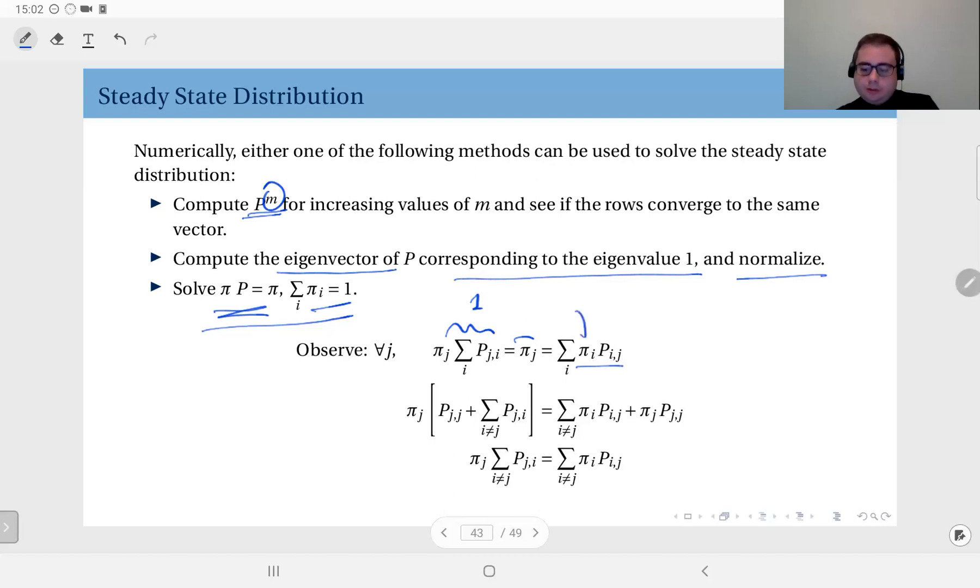This is the probability that you are in state i multiplied by the transition probability from i to j. Add these products over all i values, and that gives you the probability of being in j. So these two sides are equal, and then partition this...